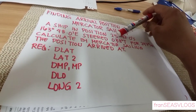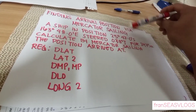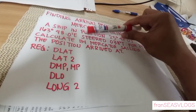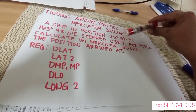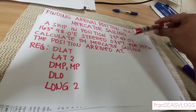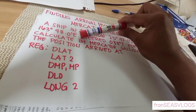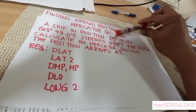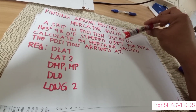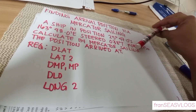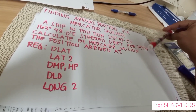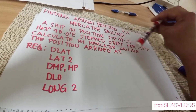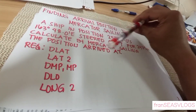Okay, let's find the arrival position of your ship via Mercator Sailing. And this is our example: a ship in position 25 degrees 47 minutes south and 163 degrees 48 minutes east, steered 038 degrees through 247.5 miles. And then calculate by Mercator Sailing the position arrived at.